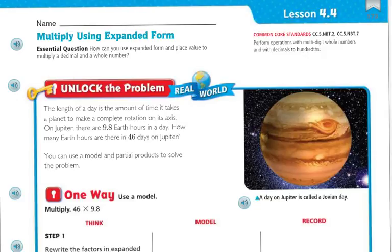Let's unlock the problem. The length of the day is the amount of time it takes a planet to make a complete rotation on its axis. On Jupiter, there are 9 and 8 tenths Earth hours in a day. How many Earth hours are there in 46 days on Jupiter? You can use a model and partial products to solve the problem.